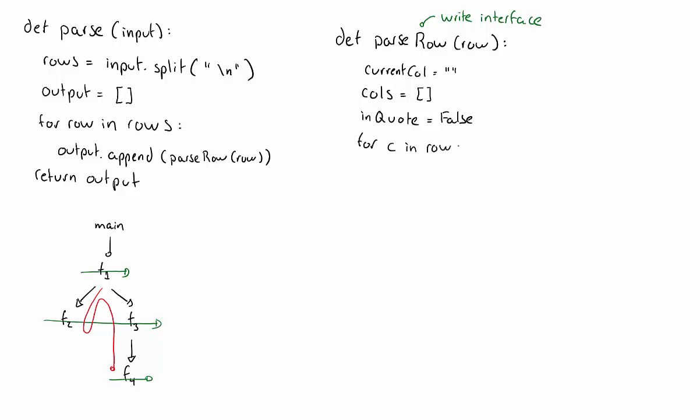For every character in a row, if I am inside the quote, I need to think about two cases. One is if the character is another quote, then I'm basically closing the quote. So I'm setting in quote to false. However, if the character is anything else, including a comma, then all I need to do is append that character to the current column.